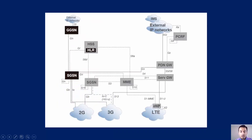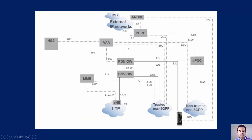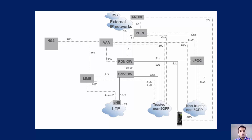Looking at the diagram, the SGW can communicate with 3G via the S4 interface, and the same SGW can communicate with 2G and 3G as well. When accessing non-3GPP, if it's trusted, the SGW can communicate directly with trusted non-3GPP. If it's non-trusted, it goes through EPDG, shown on the right side of the diagram. That's the elaboration on why those technologies are considered non-3GPP, and how they can still access the network depending on whether they are trusted or non-trusted.